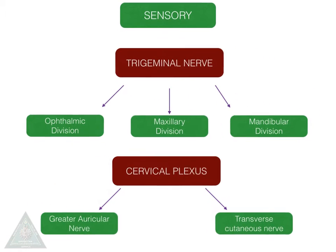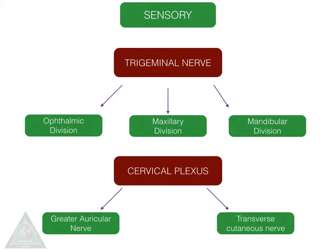The sensory nerve supply is by the trigeminal nerve, which is the fifth cranial nerve. The divisions of the trigeminal nerve are the ophthalmic division, maxillary, and the mandibular division. Also, branches from the cervical plexus include the greater auricular nerve and the transverse cutaneous nerve of the neck.